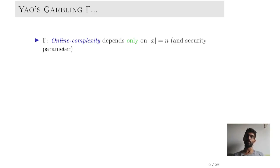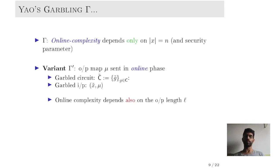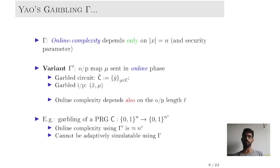Note that the online complexity of Yao's garbling is more or less optimal, since it only depends on the length of the input and the security parameter. There is a related variant called gamma prime, where the output map is sent in the online phase. Therefore, the garbled circuit consists only of the garbling tables, whereas the garbled input consists of the garbled input and the output map. The drawback of this variant is that the online complexity now grows also with the output length. Moreover, as we saw, such a scheme cannot be proven adaptively simulatable for the original Yao's scheme.